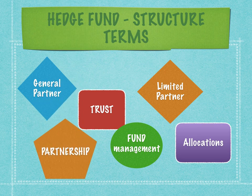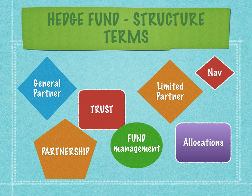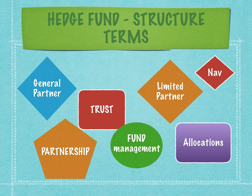Why are funds structured like a partnership? Is it mandatory that all hedge funds be structured either like a trust or a partnership, and what are the differences between them? How do we calculate NAVs? What are the entitlements of the partners in a hedge fund? I will keep uploading videos on this topic to get a good understanding and complete analysis of fund administration and accounting.